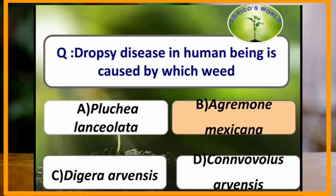Dropsy disease in human beings is caused by which weed? Dropsy disease in human beings is caused by Argemone mexicana.